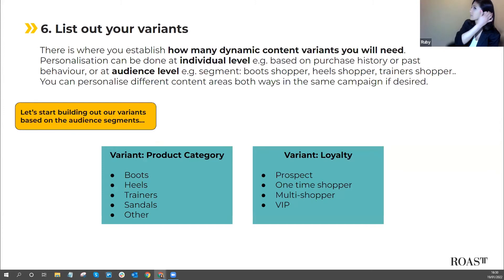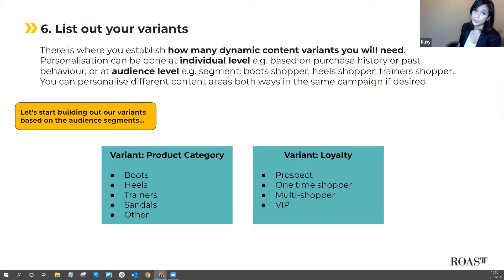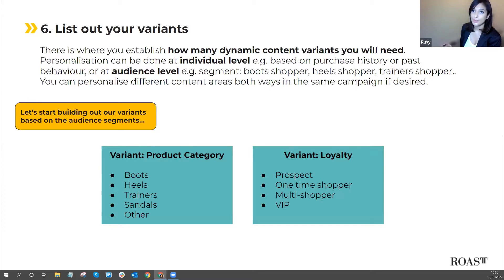Next, list out your variants — this is where we move into tactical execution. Establish how many dynamic content variants you'll need. Personalisation can be done at an individual level, for example based on purchase history or past behaviour, or at an audience level such as segments. You can personalise different content areas both ways in the same campaign if desired. Building variants for a new season launch campaign, you might focus on product category and customer loyalty based on what you know about audiences like Joe.